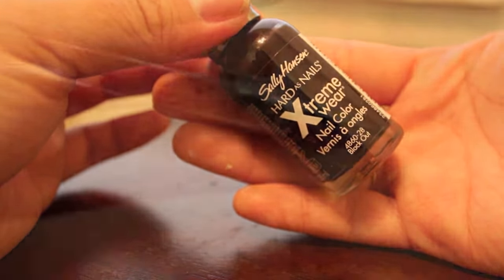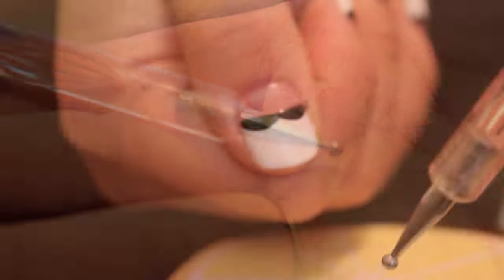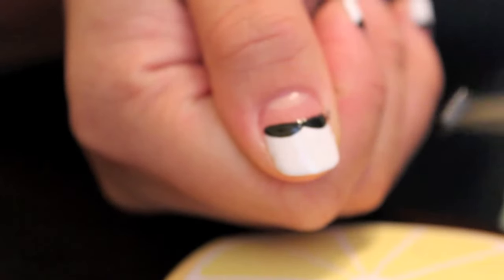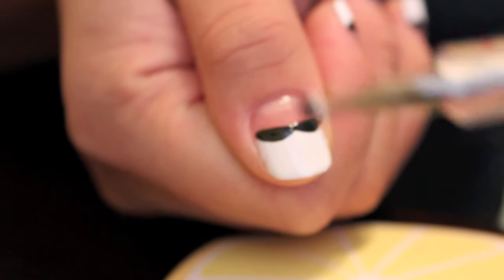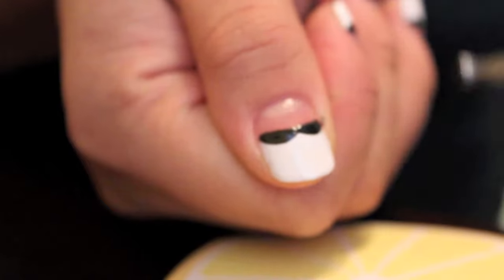Now with a black polish and a dotting tool, I'm going to dip my dotting tool into some black polish and make three dots for the buttons.